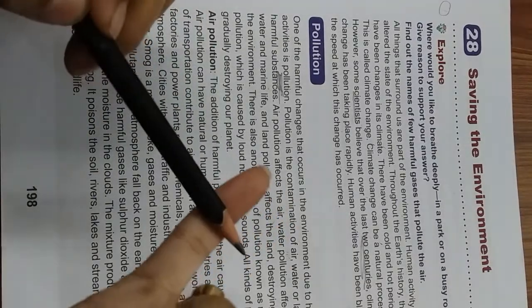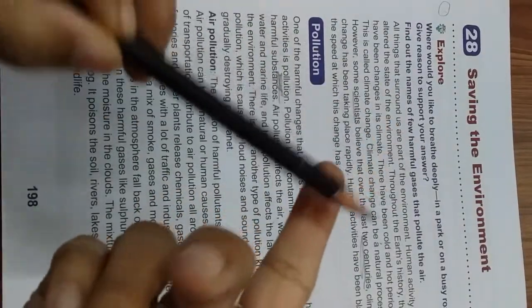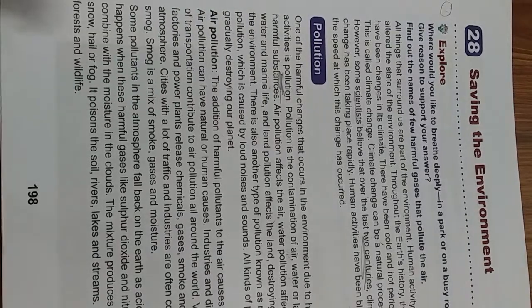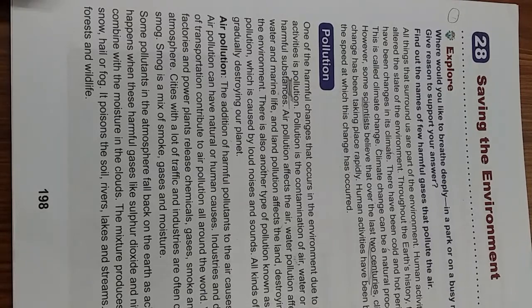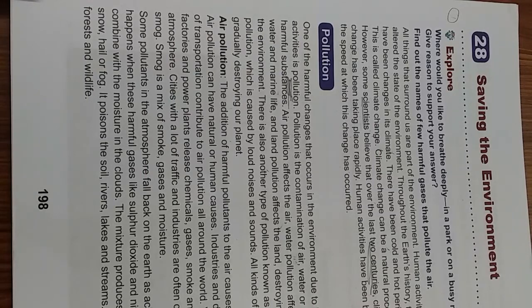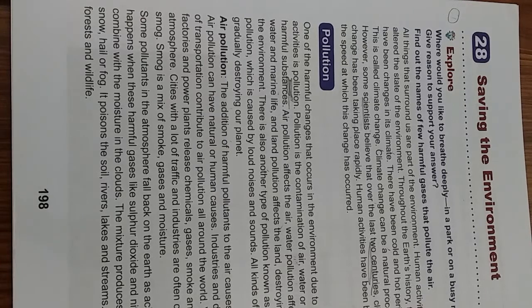All kinds of pollution are gradually destroying our planet. Our planet is being destroyed due to these four kinds of pollutions: air pollution, land pollution, water pollution, and noise pollution. So we people have to think about these four types of pollutions and how to control them. This is our responsibility to think and act on it.